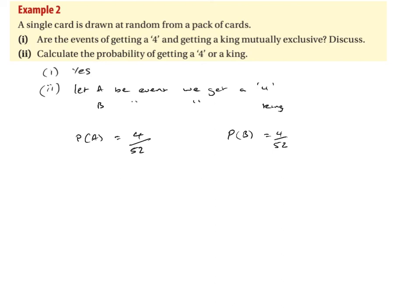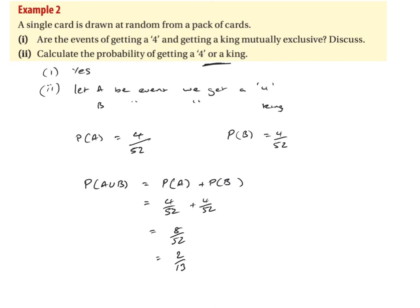We've been asked to calculate the probability of getting a four or a king. 'Or' means it's going to be A union B, and since they are mutually exclusive, P(A∪B) = P(A) + P(B). So we have four over 52 plus four over 52, which equals eight over 52, which simplifies to two over 13. Remember to always simplify your fractions as much as you can.